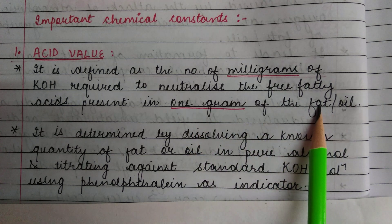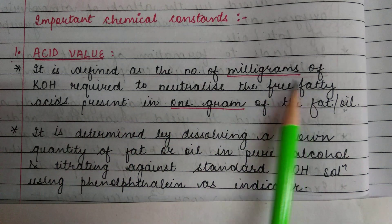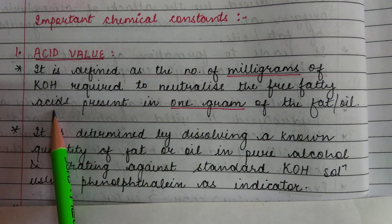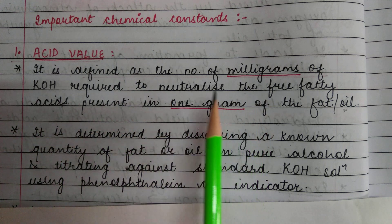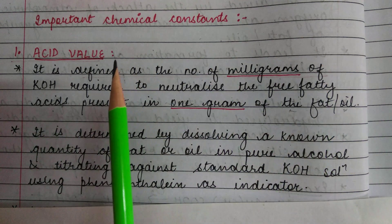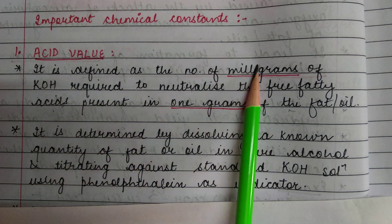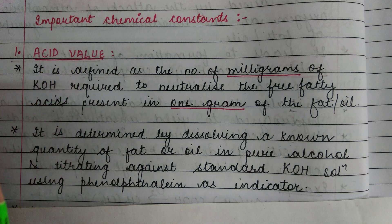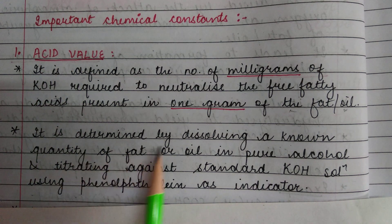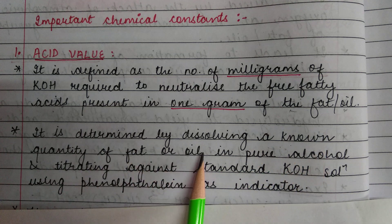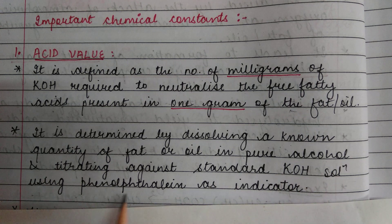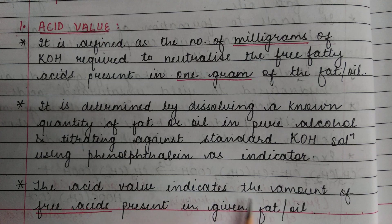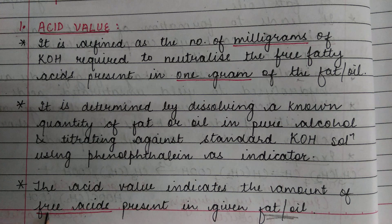In 1 gram of fat or oil, the amount of KOH required in milligrams to neutralize the free fatty acids is called the acid value. It is determined by dissolving a known quantity of fat or oil in pure alcohol and titrating against standard KOH solution using phenolphthalein as indicator.